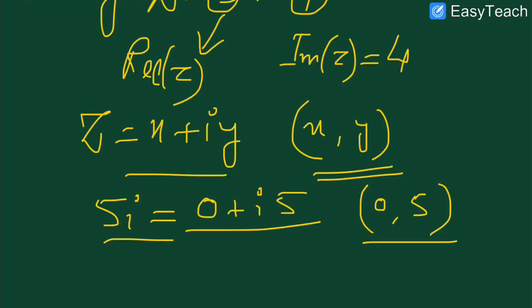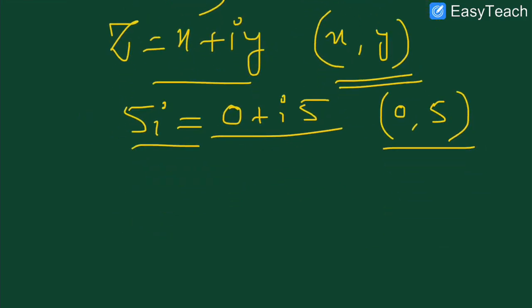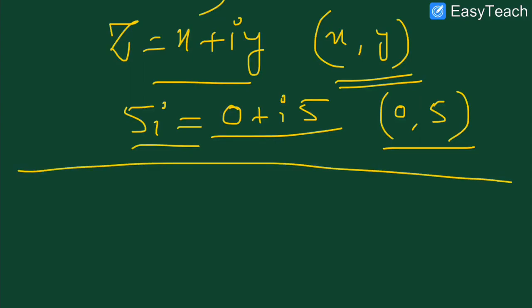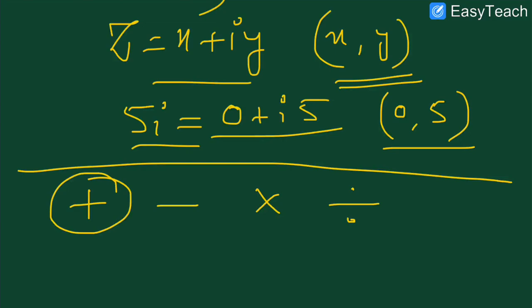Now we will apply some fundamental operations of mathematics to complex numbers. The basic fundamental operations are: first addition, then subtraction, then multiplication, then division. Let's try to find out the addition of two complex numbers, then subtraction, then we will multiply two complex numbers, and at the end of this lecture we will discuss the division of two complex numbers. First of all, let us discuss about the addition of two complex numbers.